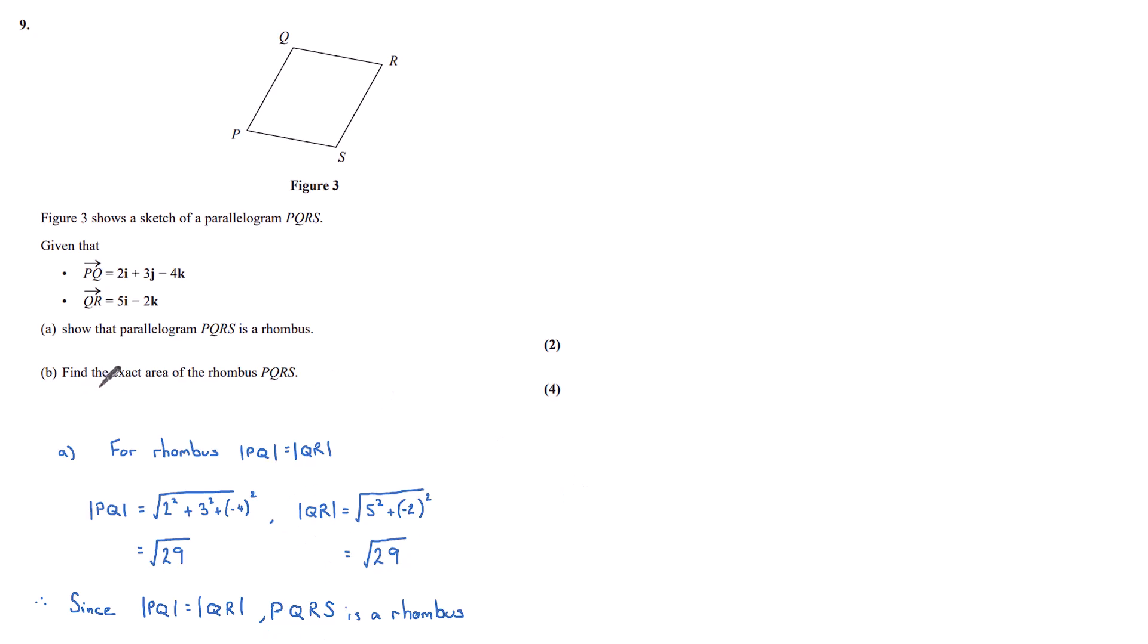Part B: find the exact area of rhombus PQRS. Well, if we imagine here the two diagonals PR and QS, if we were to multiply these two diagonals together, we would find the area of this large rectangle here. Now we don't want the area of the large rectangle, we want half of it. If we look at each quarter of this rhombus, we want half of the rectangle that's formed.